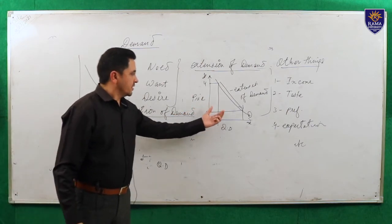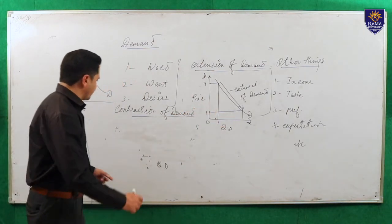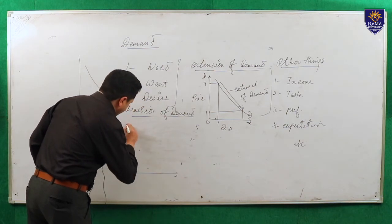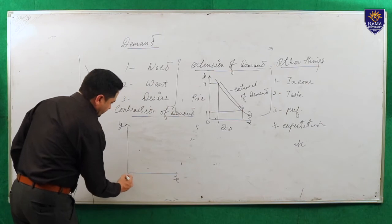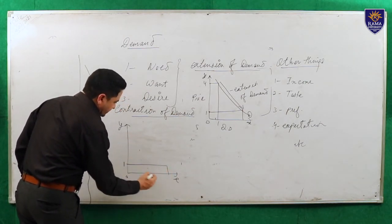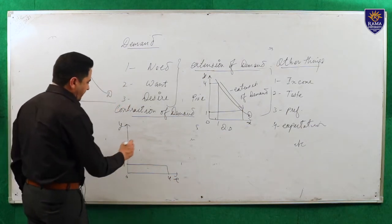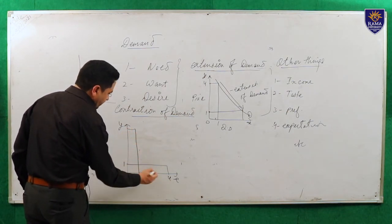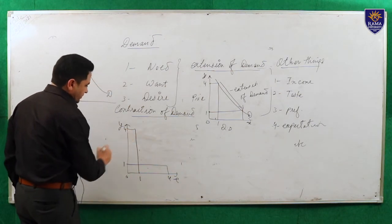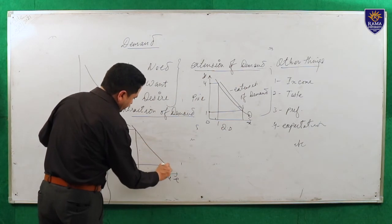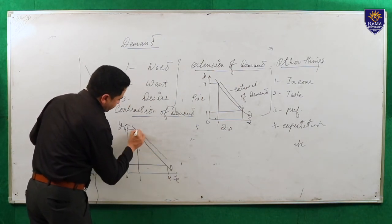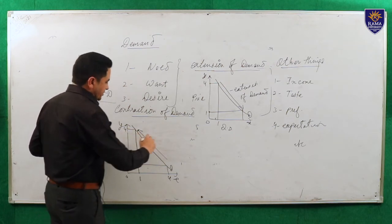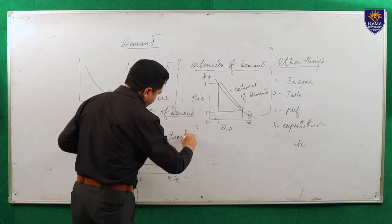Contraction of demand is the condition just opposite of extension of demand. We can understand with the help of curves. Suppose the price is 1 and demand is 4. And the price increases from 1 to 4, so demand decreases from 4 to 1. So it shifts in a contraction form. This is the part of contraction of demand.